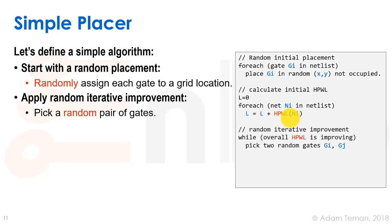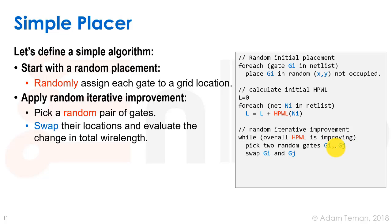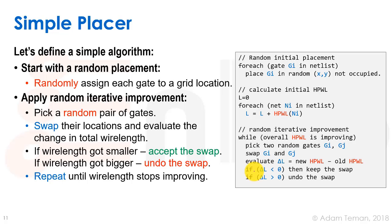Then we're going to apply what's called random iterative improvement - you can also call it hill climbing. We're going to pick a random pair of gates, Gi and Gj, just a random pair, and we're going to swap between them. We're going to change their location and then recalculate our wire length.